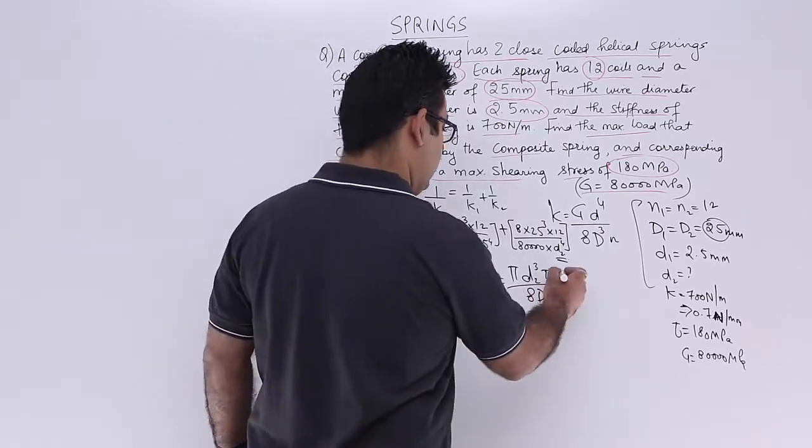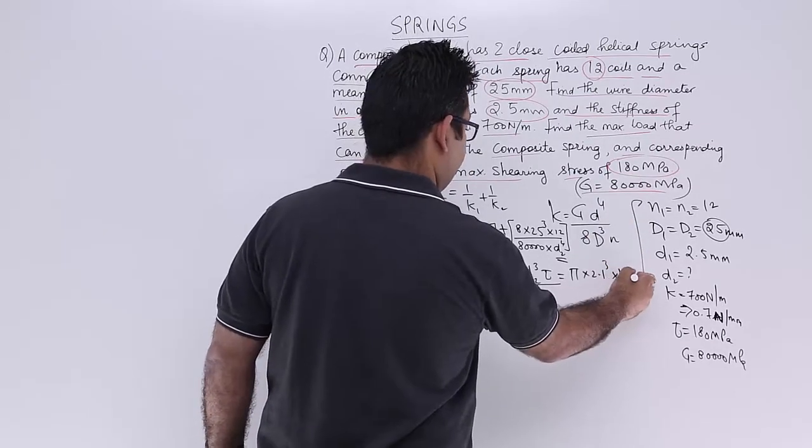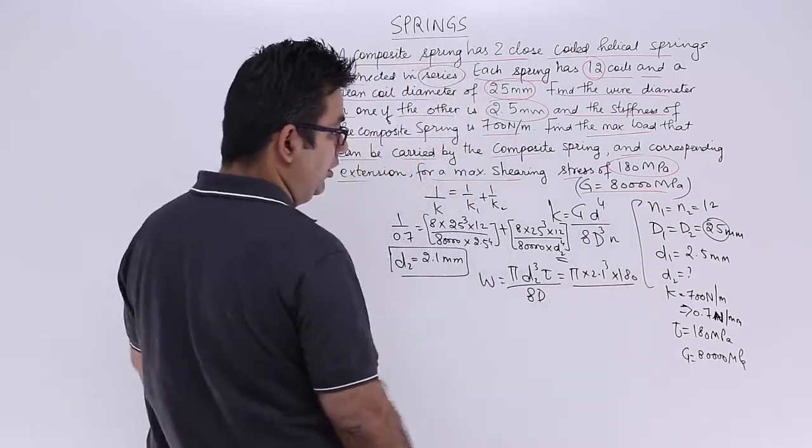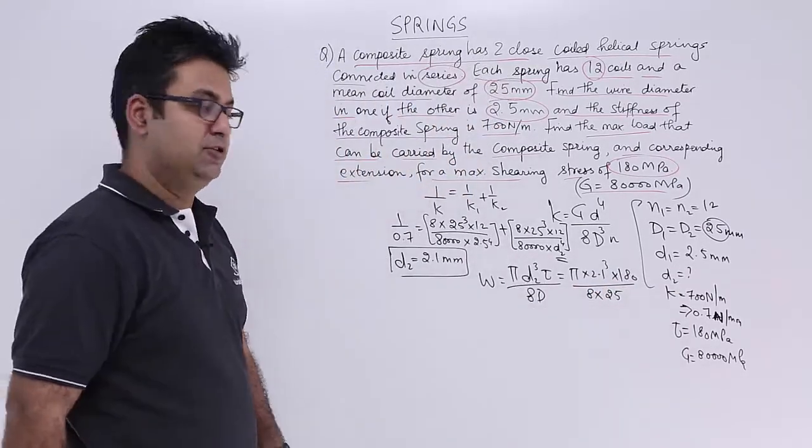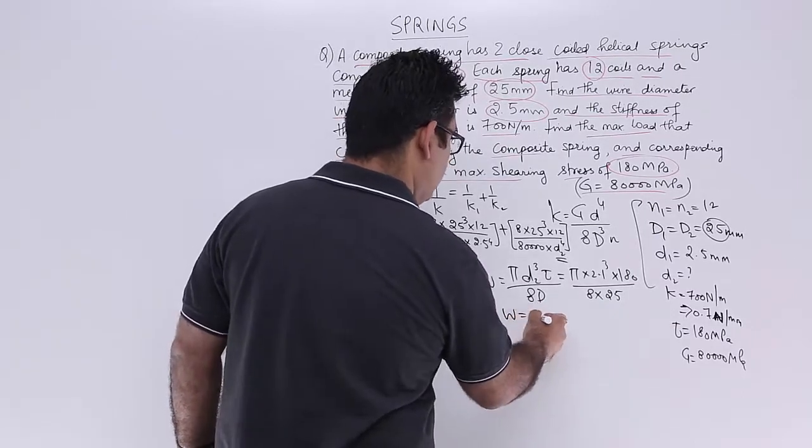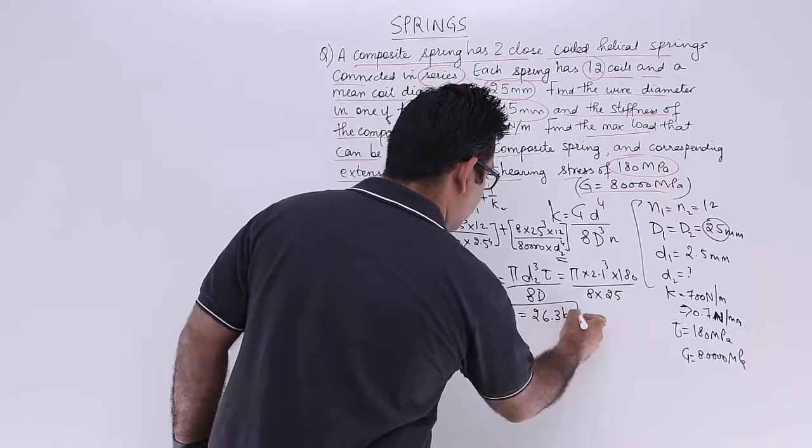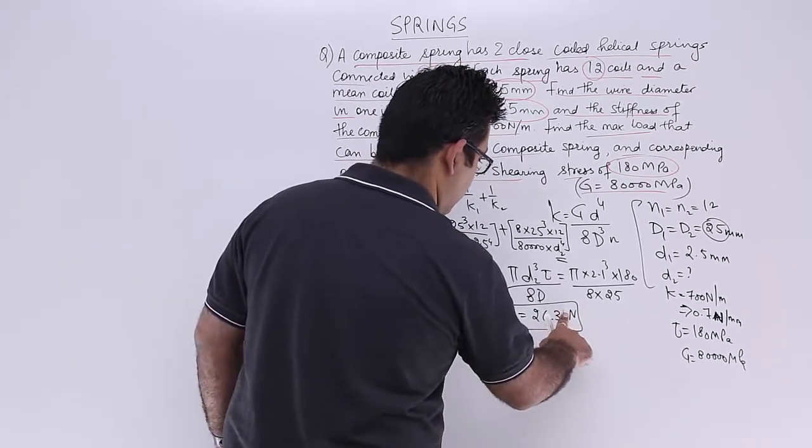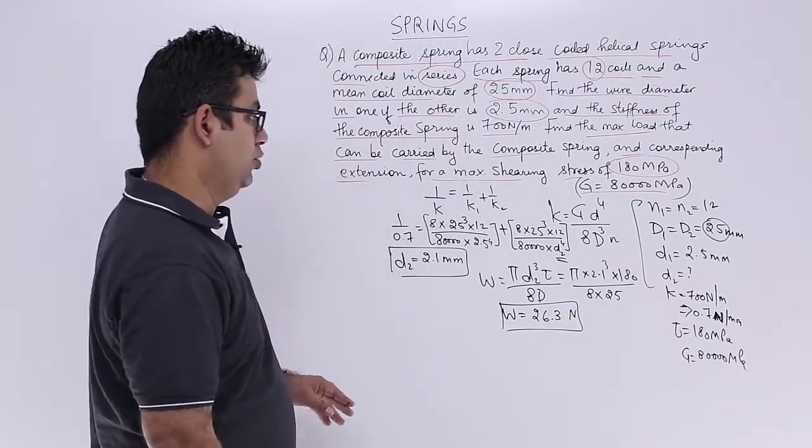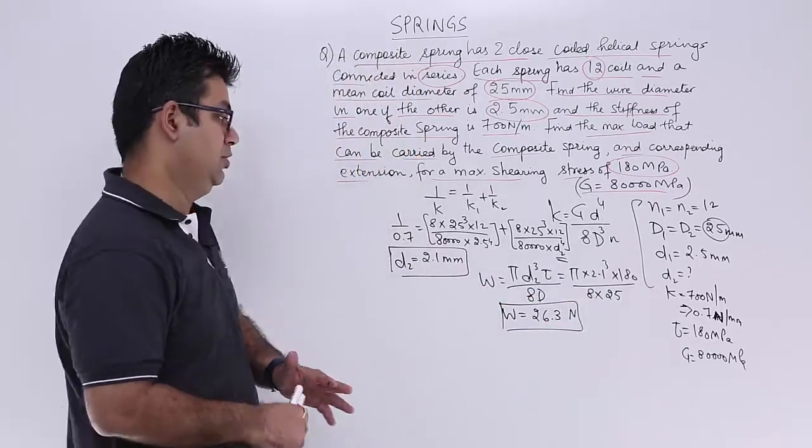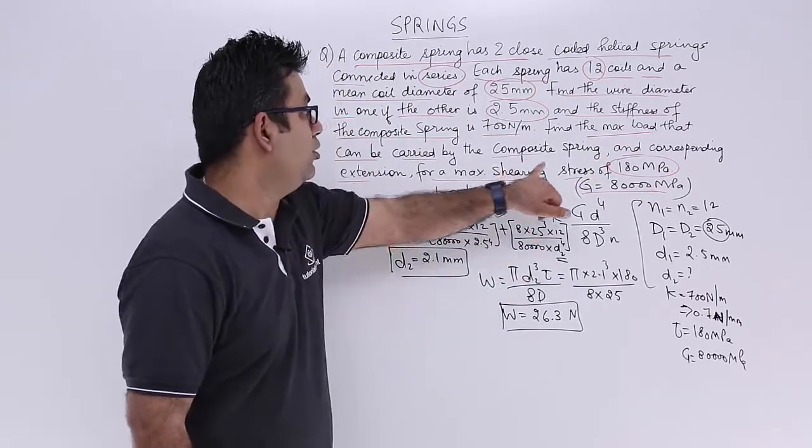So you will get pi times 2.1 cubed, tau is 180, upon 8 times 25. This will give you a value of W as 26.3 kilonewtons. So this is not kilo but only newtons. We have already converted this into mm. So this is MPa. You will only get newtons. So this is the maximum load that can be carried by the composite spring.